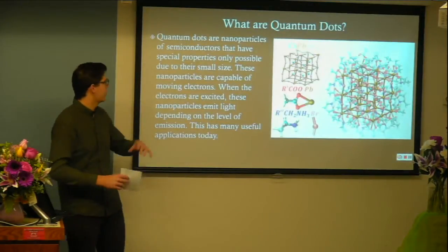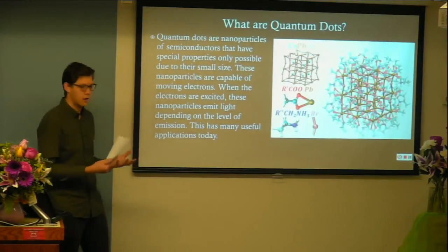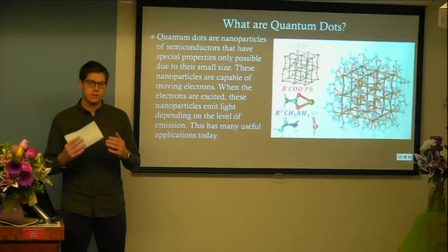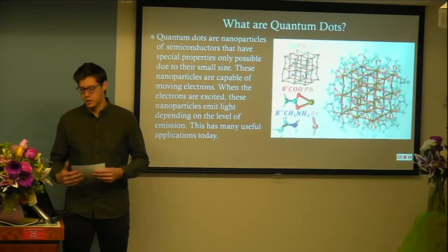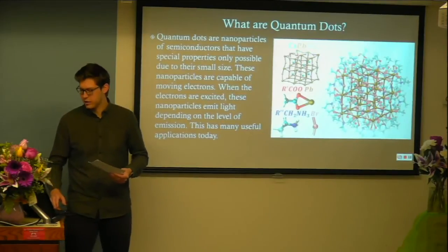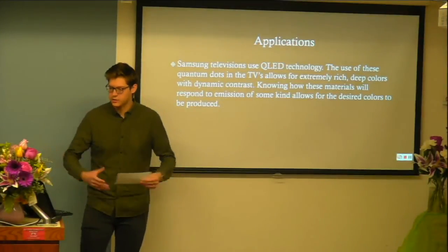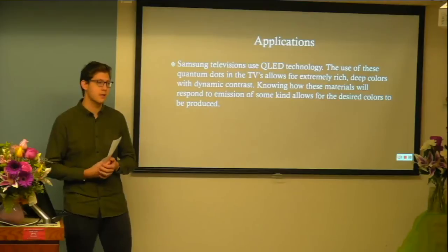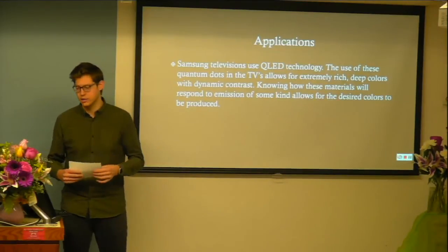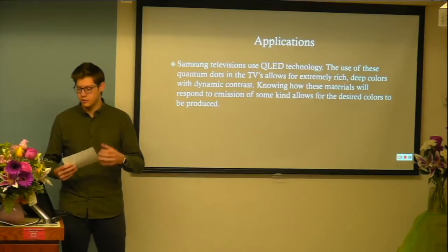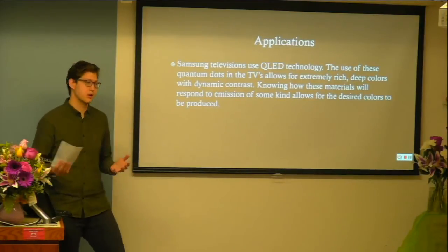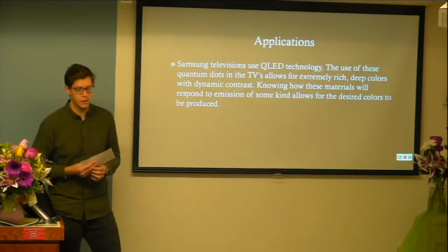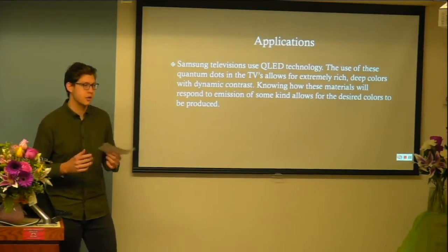First, just a quick overview of quantum dots. They're nanoparticles of semiconductors, and they have special properties due to their small size. This allows the transfer of electrons, which makes light emission possible when they're excited. A huge application right now is TV — Samsung makes a QLED TV that uses this technology, allowing very nice colors with deep contrast. Another application with perovskite quantum dots in particular is solar panels, due to their high conductivity.